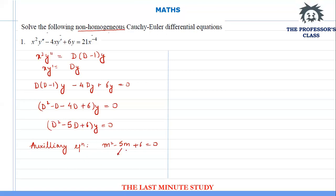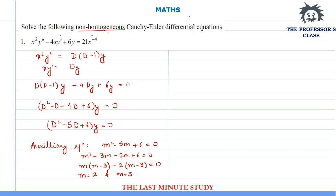I can easily split the middle term. I will get two components: minus 3m and minus 2m. So this equation becomes m² minus 3m minus 2m plus 6 equals 0. Taking m common from the first two terms gives m(m minus 3), and taking minus 2 common from the last two terms gives minus 2(m minus 3) equals 0. This gives two values: m equals 2 and m equals 3.